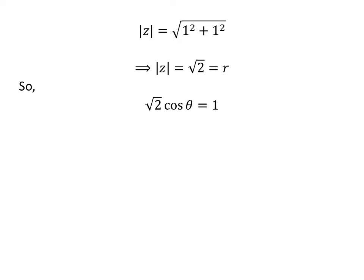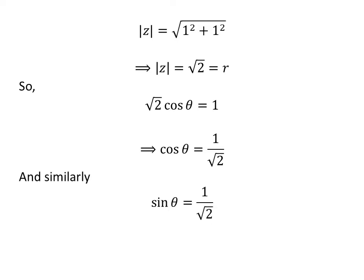As we know, R times cosine of theta is equal to 1, so square root of 2 times cosine of theta is equal to 1. Dividing by square root of 2 gives cosine of theta equal to 1 upon square root of 2. Similarly, we get sine of theta equal to 1 upon square root of 2.